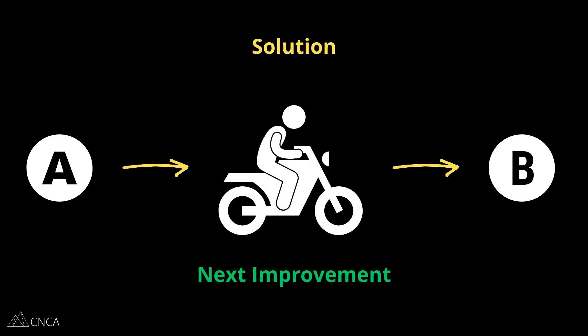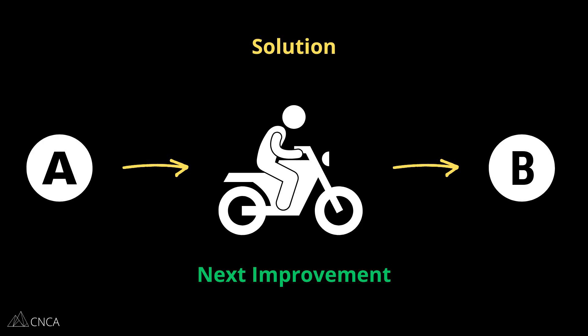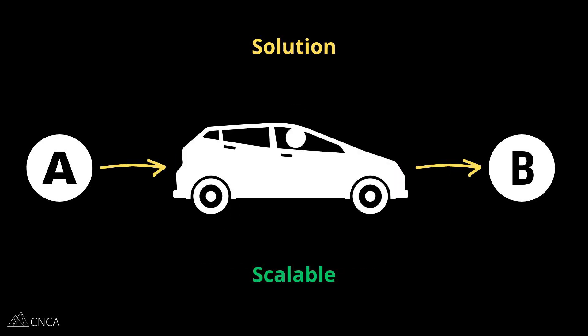Then we have a motorcycle. Now we've introduced an engine. This is something more people may love and pay for on a consistent basis because we're significantly increasing the distance we can travel while also decreasing the physical exertion on our bodies. It just keeps getting better. Finally, we have the car.